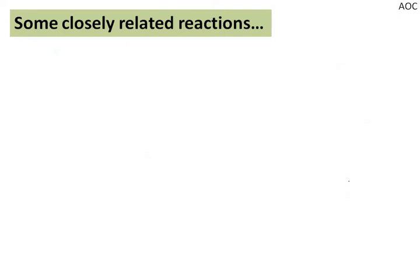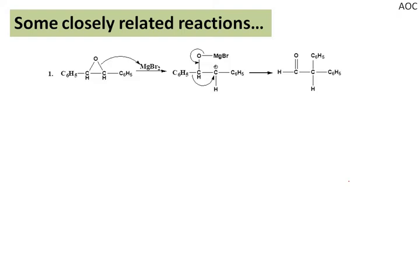Now there are some closely related reactions similar to pinacol pinacolone rearrangement. You can take them as examples of the same. This first one is an epoxide ring opening. In the presence of MgBr₂, the positive charge will come to this carbon. It is a symmetrical molecule so the positive charge can come to any of these two carbons. The question is: out of hydrogen and phenyl, which will migrate to this carbon? The answer is phenyl, because the migratory aptitude of phenyl is higher than hydrogen. So we will have the corresponding product.